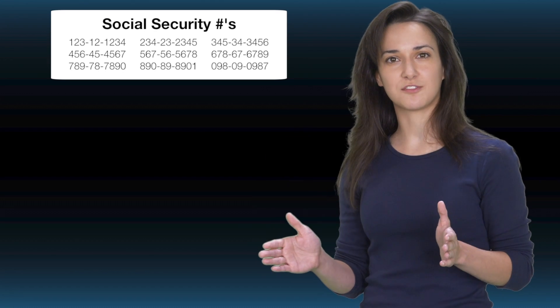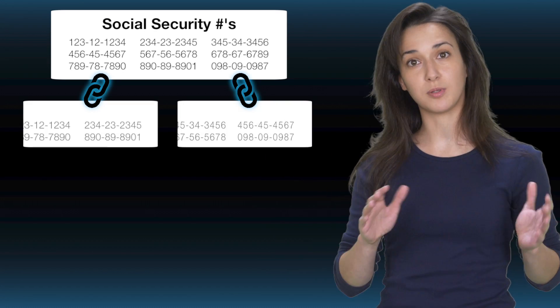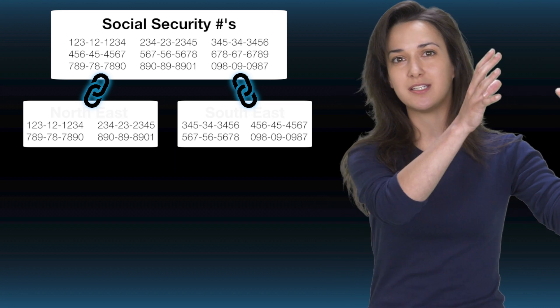Going back to how the word block in blockchain represents a list of records, let's imagine a list of social security numbers or hashes. Imagine that each list of social security numbers are stored in blocks, and each block represents a region.